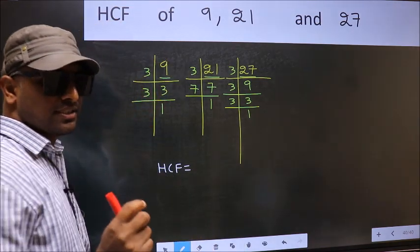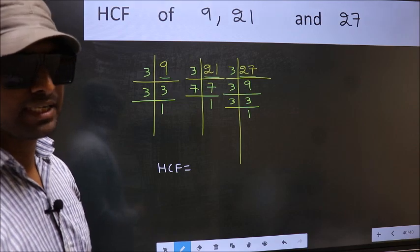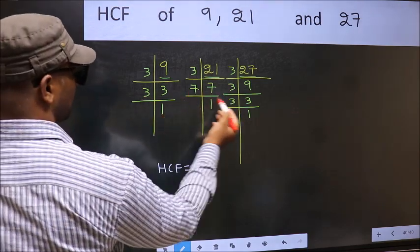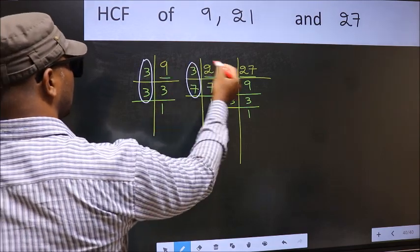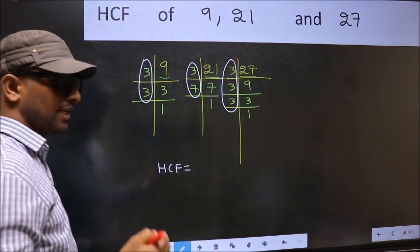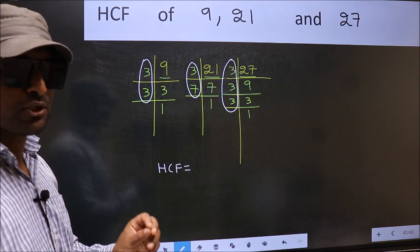HCF is the product of numbers which should be present in these three places—that is, here and here and also here. I repeat: HCF is the product of numbers which should be present in these three places.